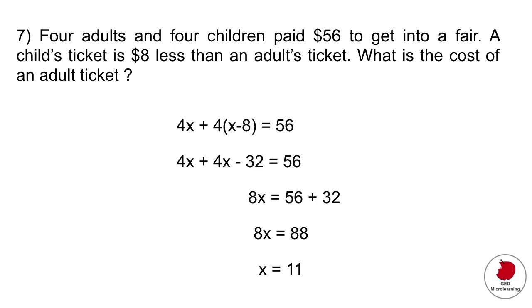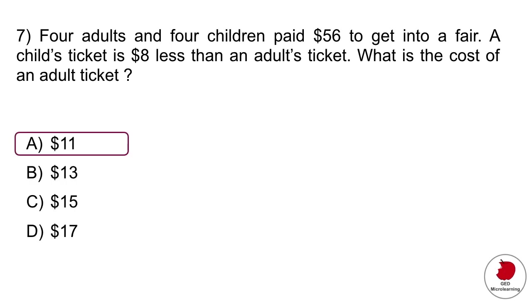Multiply it out and you end up with x equals 11. So the cost of an adult ticket was $11, which is option A.